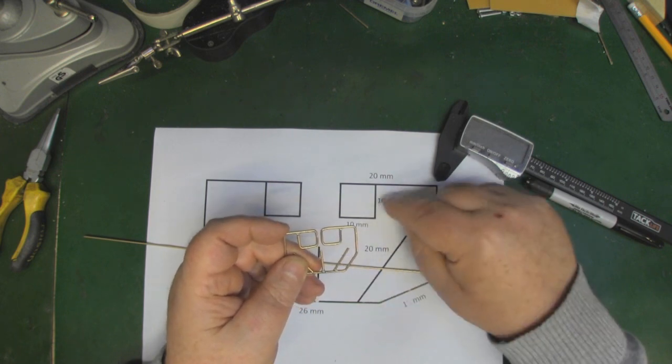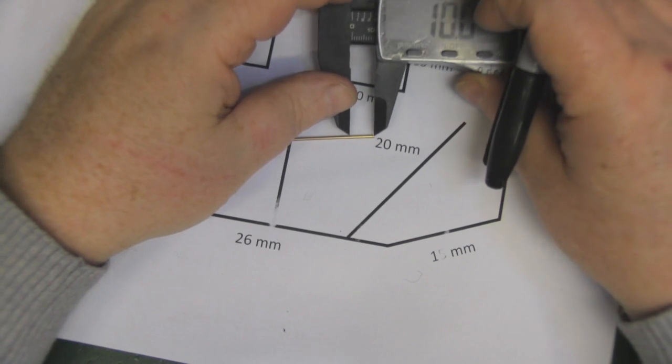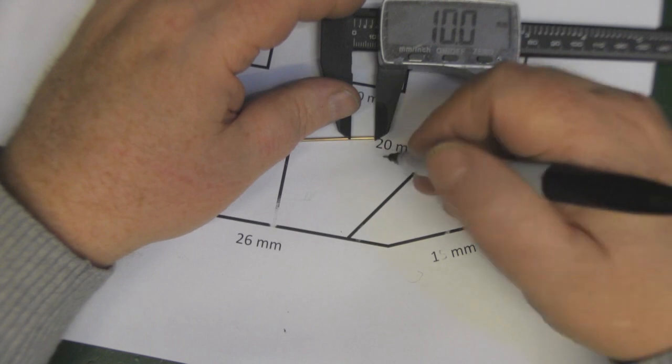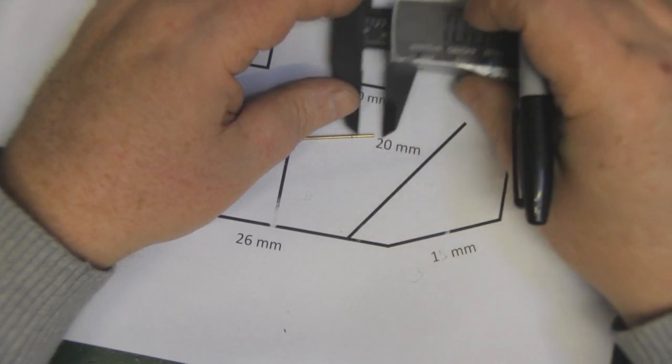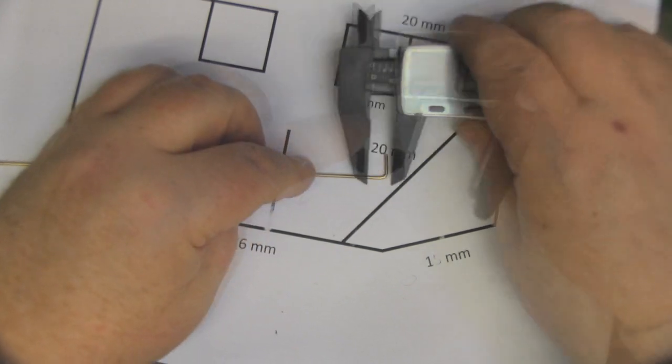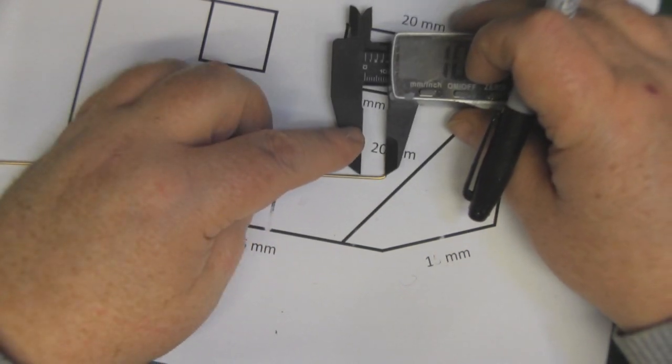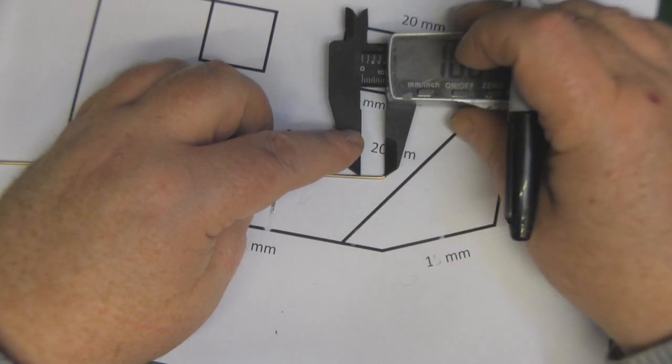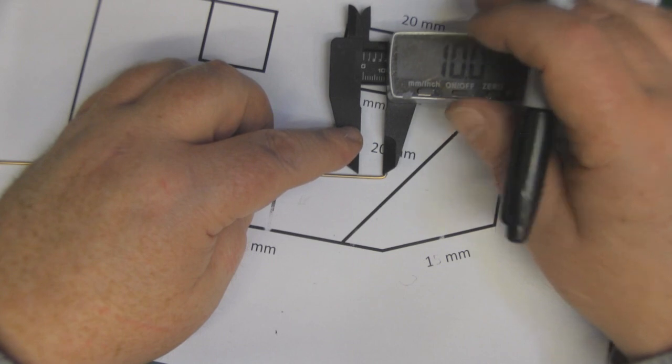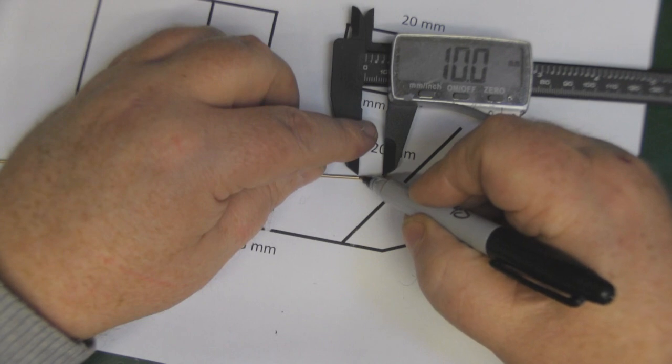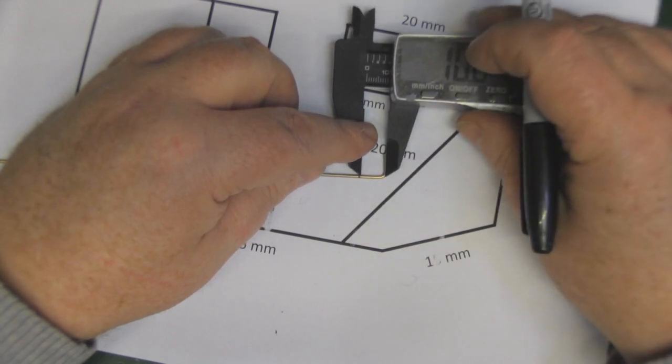To start the antenna off, I've got my calipers here set at 10 millimeters. I'm just going to put a little mark and put my first bend in. For my second mark, I'm going to put my calipers right in the middle of that first bend. Although this is a pretty forgiving antenna, if you're off by a millimeter it's not going to make that much difference.